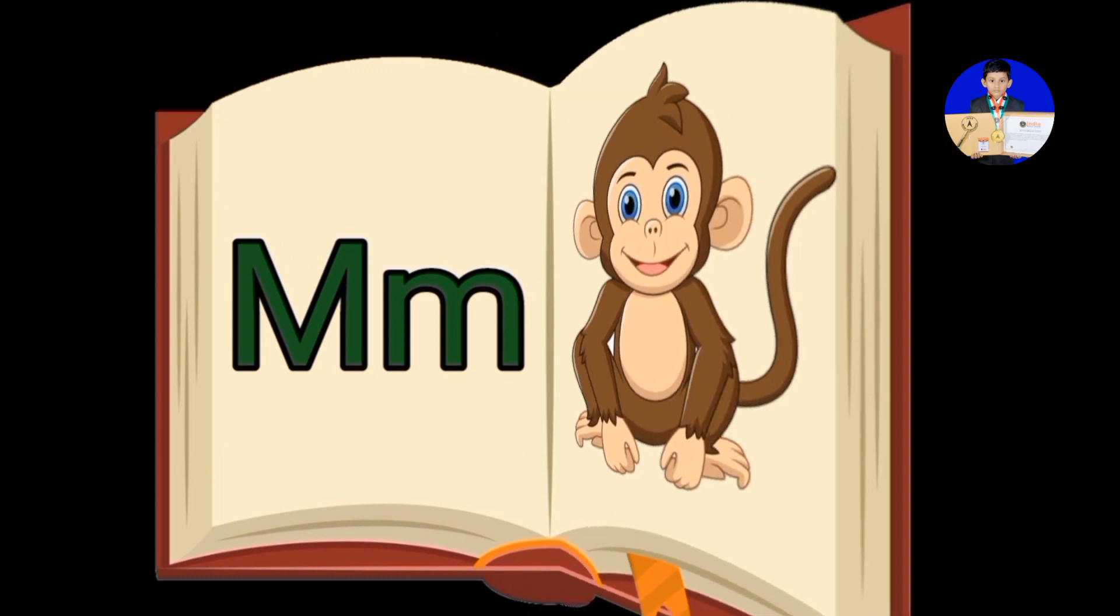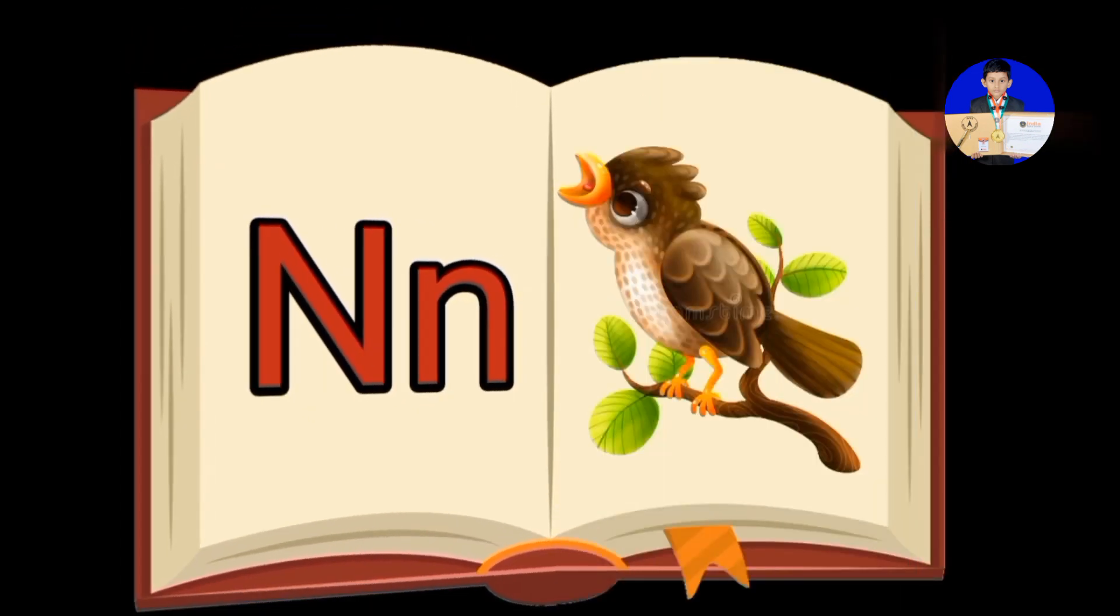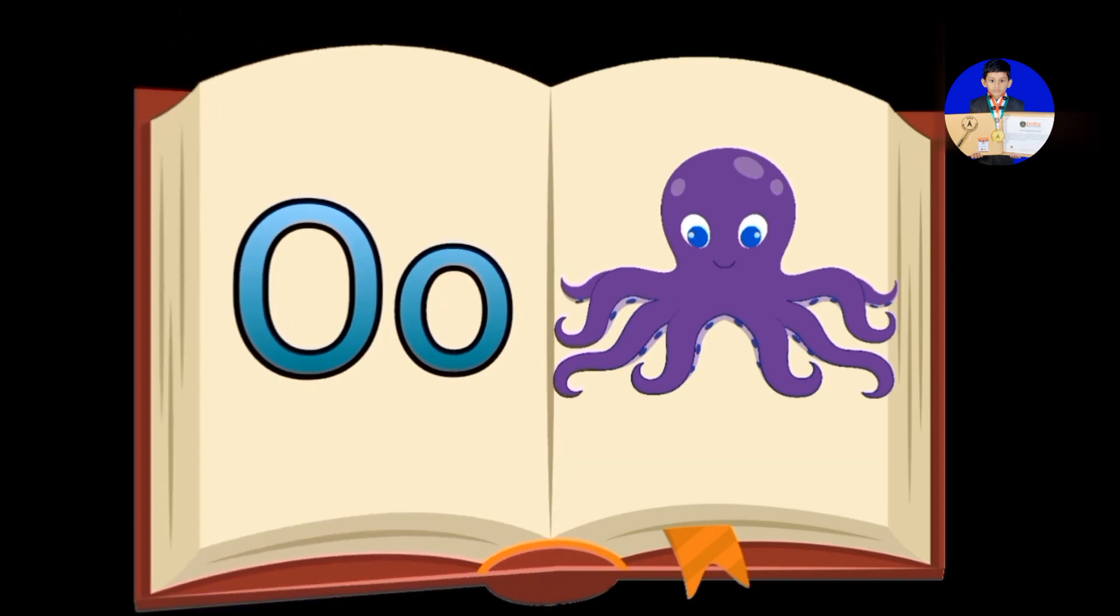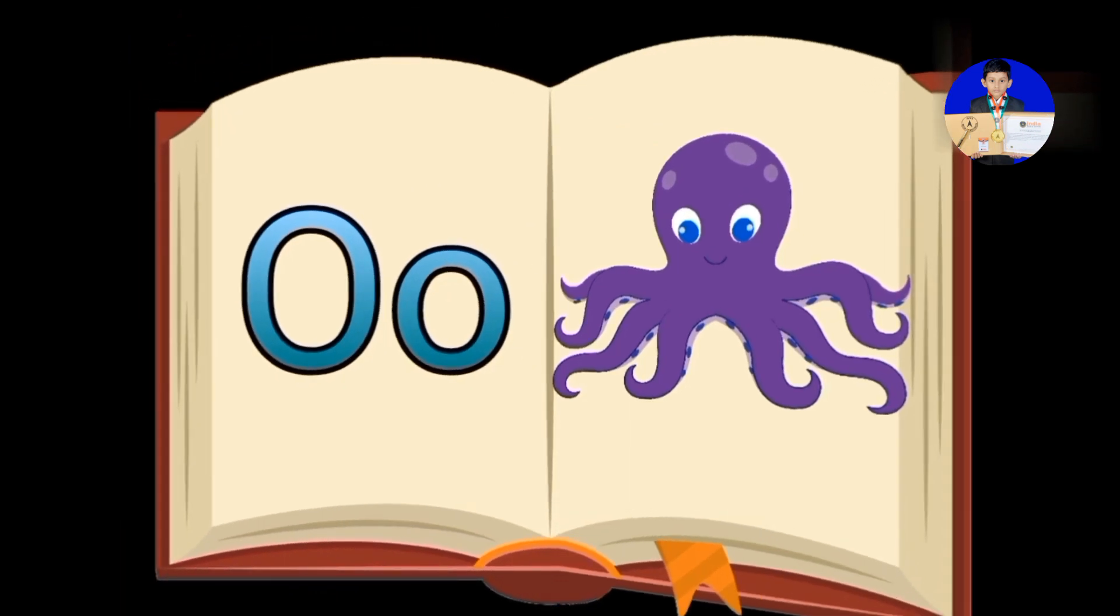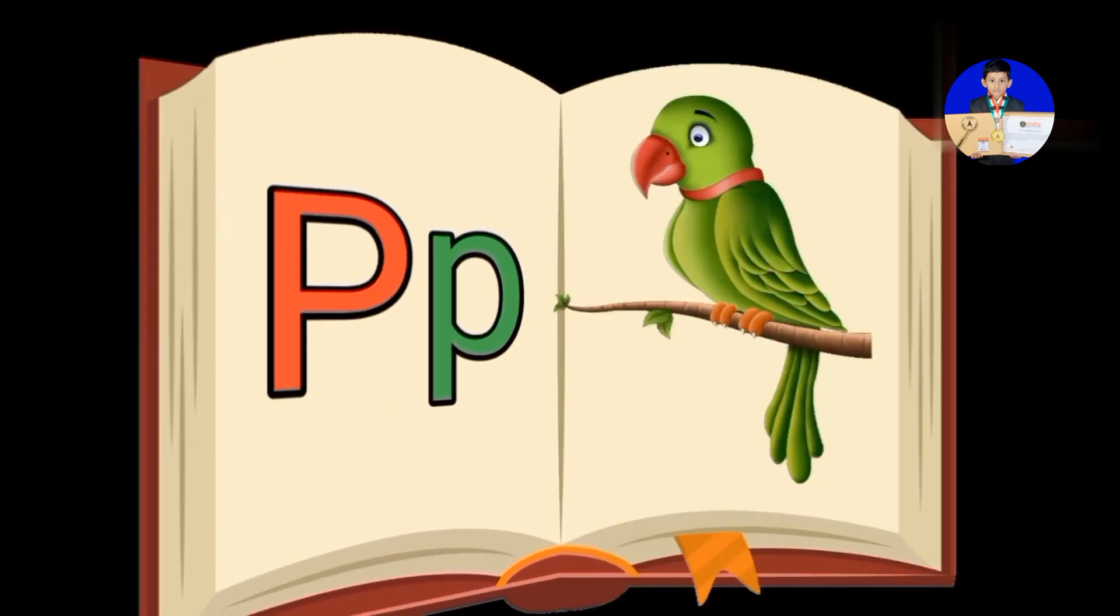N is for Night Angle. O is for Octopus. P is for Parrot.